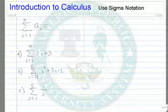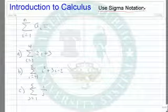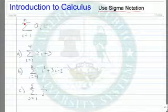As we get ready to approximate the area under the curve, we need to understand how to use sigma notation. The sigma is like an S in Greek and it stands for the sum of.